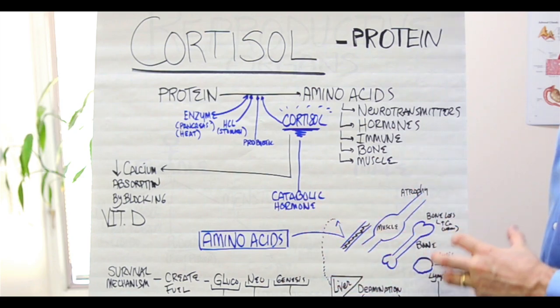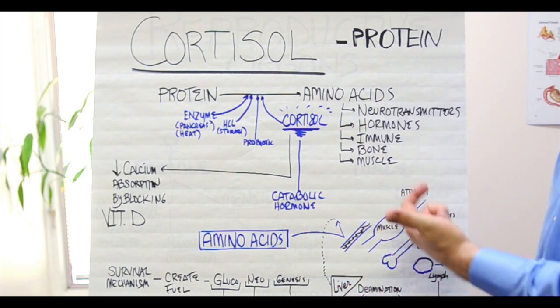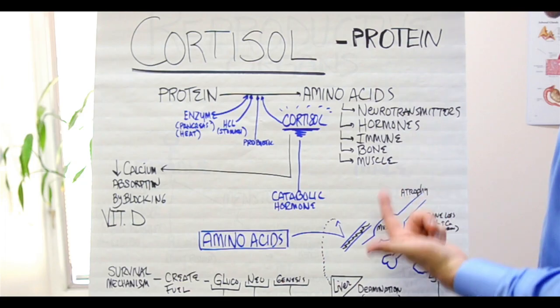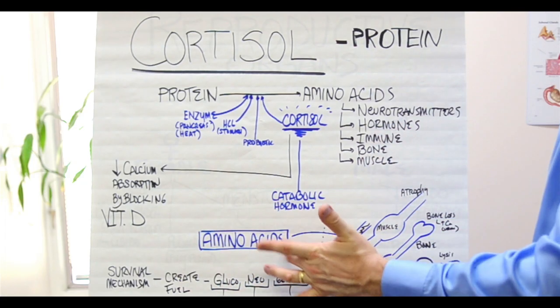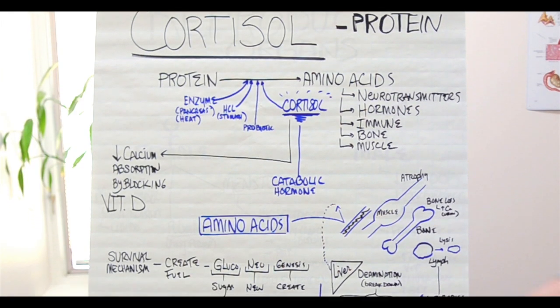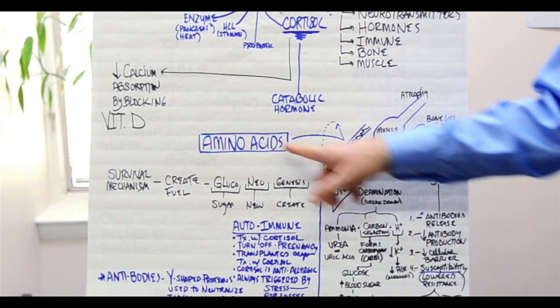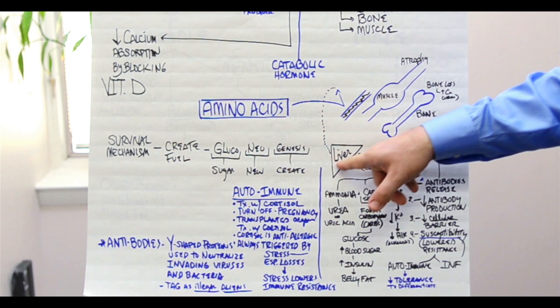We have the suffering of all the body tissues involved with protein: muscle, tendon, ligament, bone, lymph. All these things don't get the proper amino acids. So now these amino acids go instead to the liver.